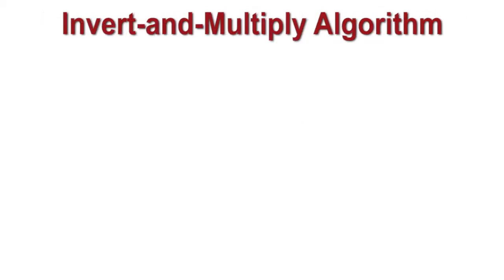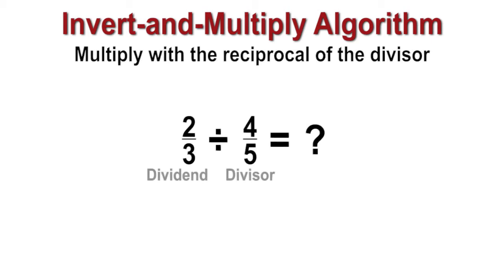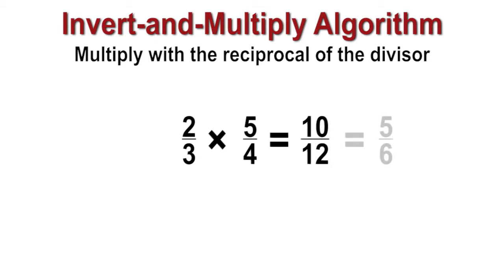The invert and multiply algorithm is a strategy for solving fraction division problems that involves multiplying the dividend by the reciprocal of the divisor. 2/3 divided by 4/5 goes to 2/3 times 5/4, which is 10/12, which can be changed to an equivalent fraction of 5/6.